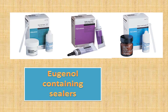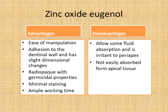Coming to zinc oxide eugenol-based sealers. The advantages are: it is very easy to manipulate, it can adhere to the dentinal wall, and has very slight dimensional changes. It is radiopaque so it can be easily appreciated in an intraoral periapical radiograph. It has good germicidal properties, very minimal staining of the dentine, and provides ample working time because it is very slow in setting. The disadvantages are: it allows some fluid absorption, it can be irritant to the periapical area if extruded beyond the apex, and it is not easily absorbed from the apical tissues.